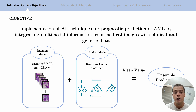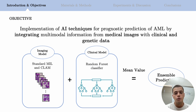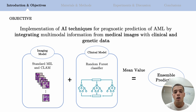Secondly, we employed a multivariable model that combined clinical and genetic data from the patients using a random forest algorithm. This model took into account crucial clinical features such as the age of the patients at the time of diagnosis, the cytogenetic complexity and the blast percentage. Finally, we integrated these two approaches into an ensemble model which combined the strengths of both the image and the multivariable models to enhance the overall predictive accuracy.